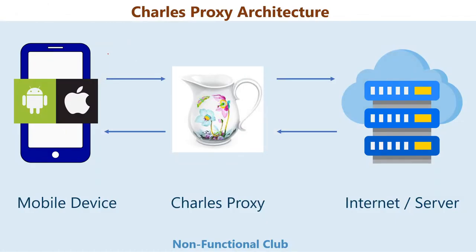Let's have a look at the Charles Proxy architecture — how Charles Proxy actually works. There are three modules: your mobile device, Charles Proxy, and the internet or server machine where requests are processed. In a client-server architecture, a client sends a request and gets a response. With Charles Proxy in between, set as a proxy, each and every network call goes through Charles Proxy itself.